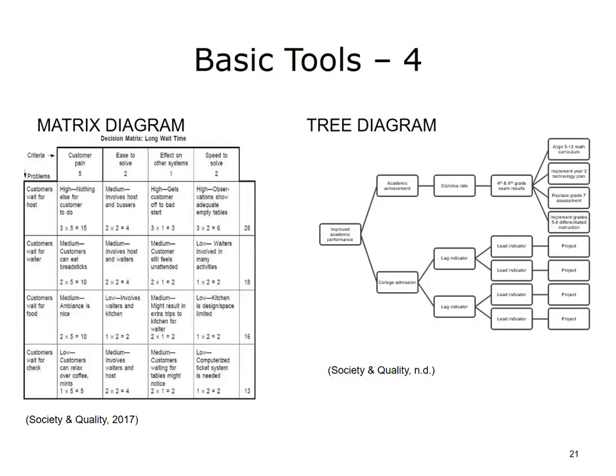Priorities Matrix: The Priorities Matrix uses a series of planning tools built around the Matrix Chart. This matrix helps when there are more tasks than available resources, and management needs to prioritize based on data rather than emotion. A Priorities Matrix allows a group to systematically discuss, identify, and prioritize the criteria that have the most influence on the decision, and study the possibilities.